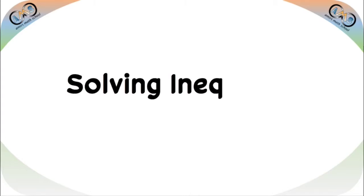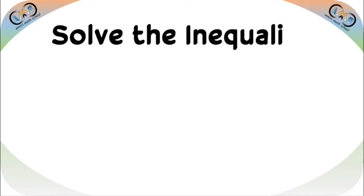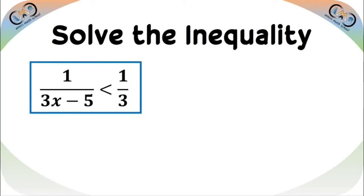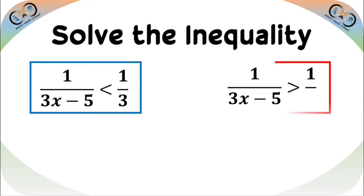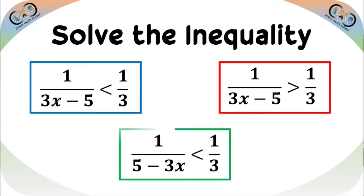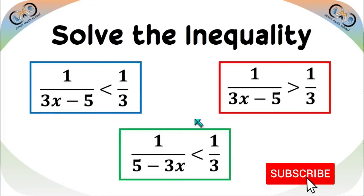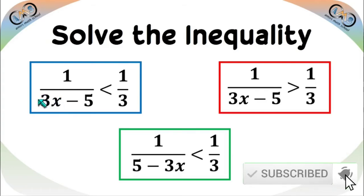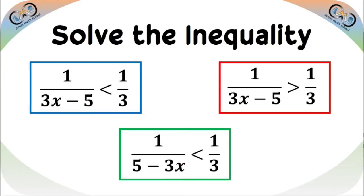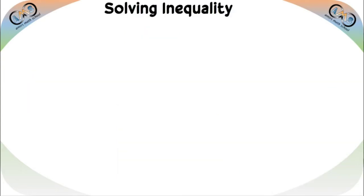Welcome to Amit's Math School. In this video we are going to discuss solving inequalities of the following types: 1/(3x−5) < 1/3, 1/(3x−5) > 1/3, and 1/(5−3x) < 1/3. In the first two types, the sign before the variable is positive. In the third type, the sign before the variable is negative. Let's start the main topic and solve the first inequality.